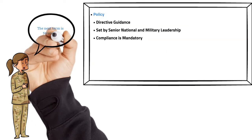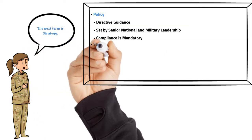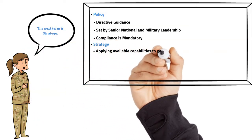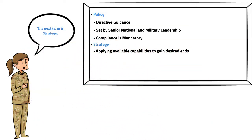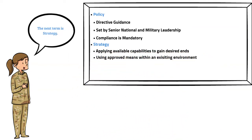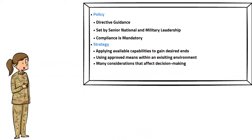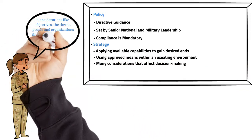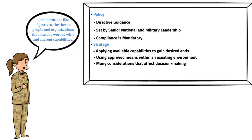Another term to know is strategy. Strategy is about applying available capabilities to gain desired ends, using approved means within an existing environment. It has many considerations that affect decision-making, including objectives, the threat, people and organizations that must be worked with, and current capabilities.